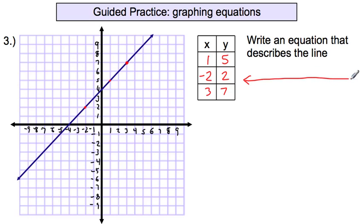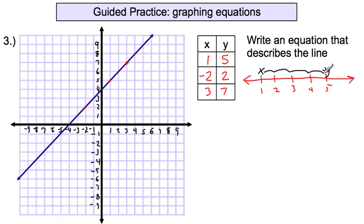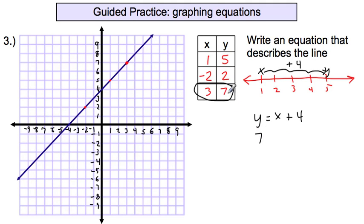Next step: what is our equation? Creating a short number line — I have to go from 1 to 5, so it's 1, 2, 3, 4, 5. The x is at 1 and the y is at 5. What happened from x to y? It's add 1, 2, 3, 4 — moving to the right, you're adding. How many spaces? 4. So x plus 4 equals y, and we write it as y equals x plus 4. Now we confirm with another set of data: 7 for y equals 3 for x plus 4. And 7 equals 7. Check.